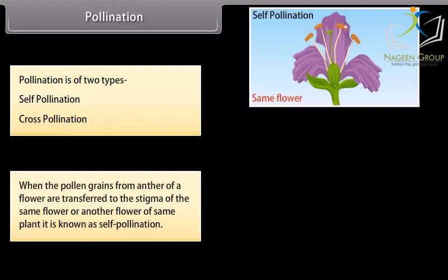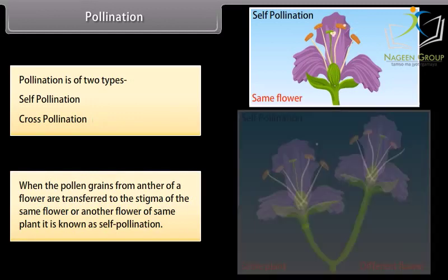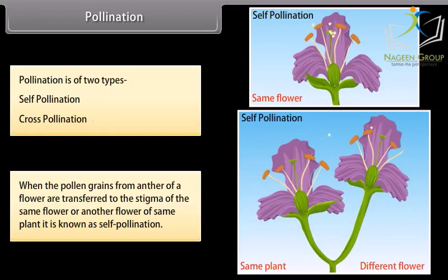When the pollen grains from anther of a flower are transferred to the stigma of the same flower or another flower of same plant, it is known as self-pollination.